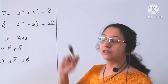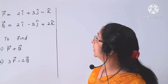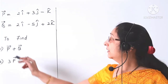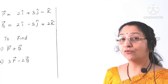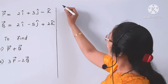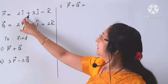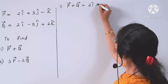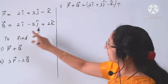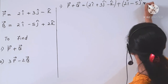The next problem: we are given two vectors — vector p is 2i plus 3j minus k, and vector q is 2i minus 5j plus 2k. We are asked to find the addition of the two vectors, that is p plus q, and also 3p minus 2q.